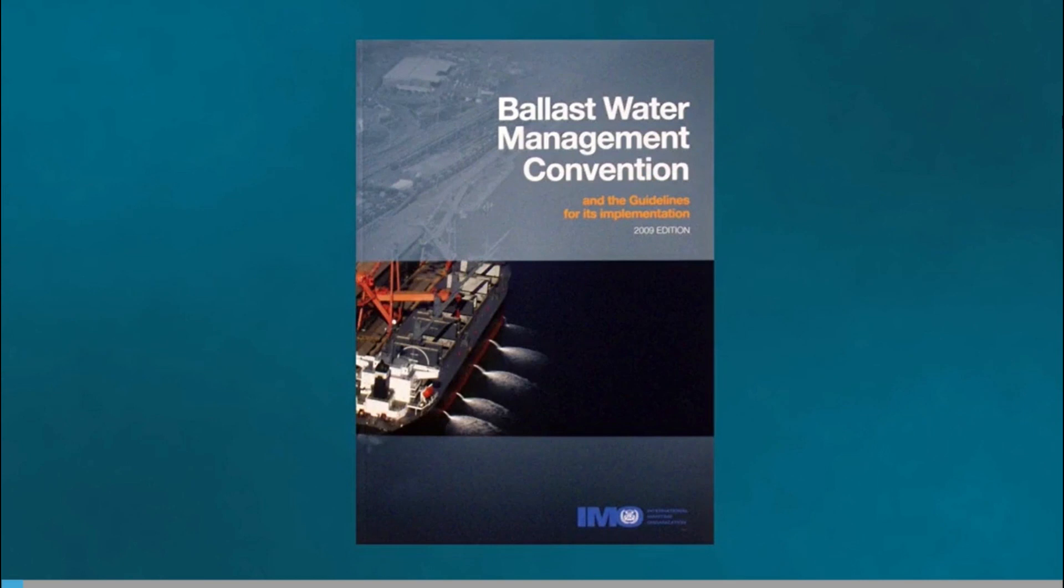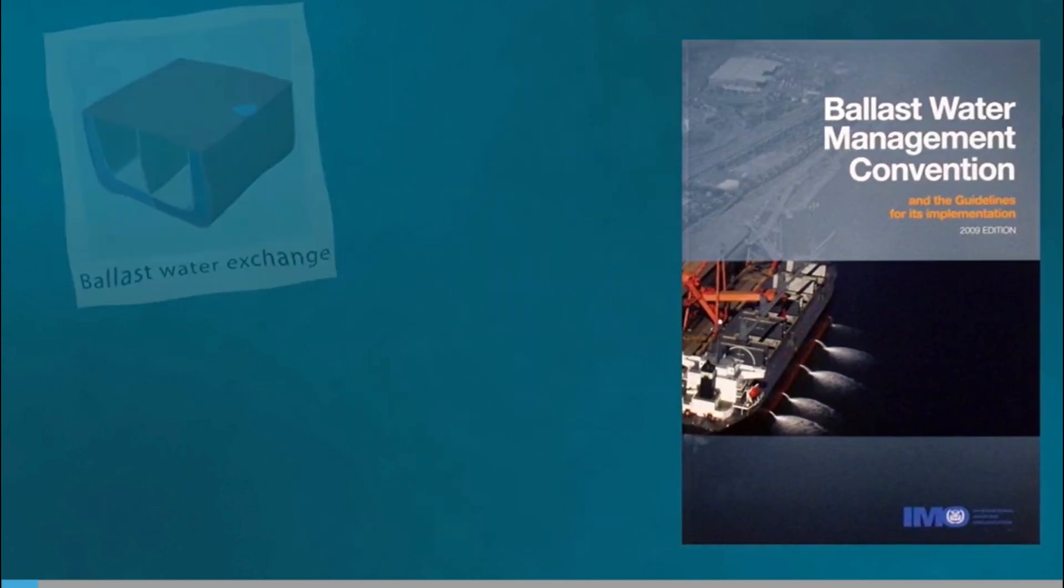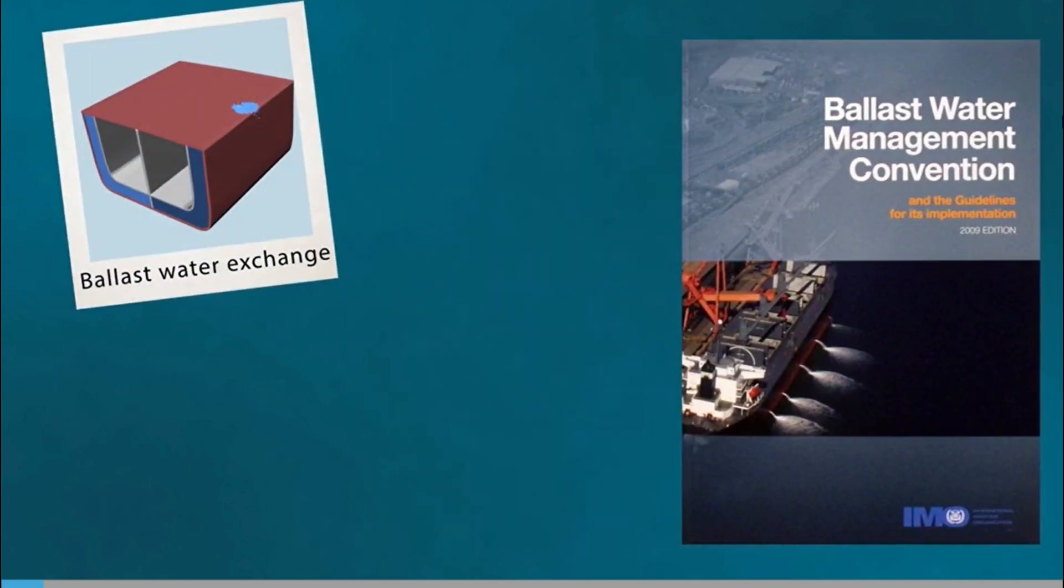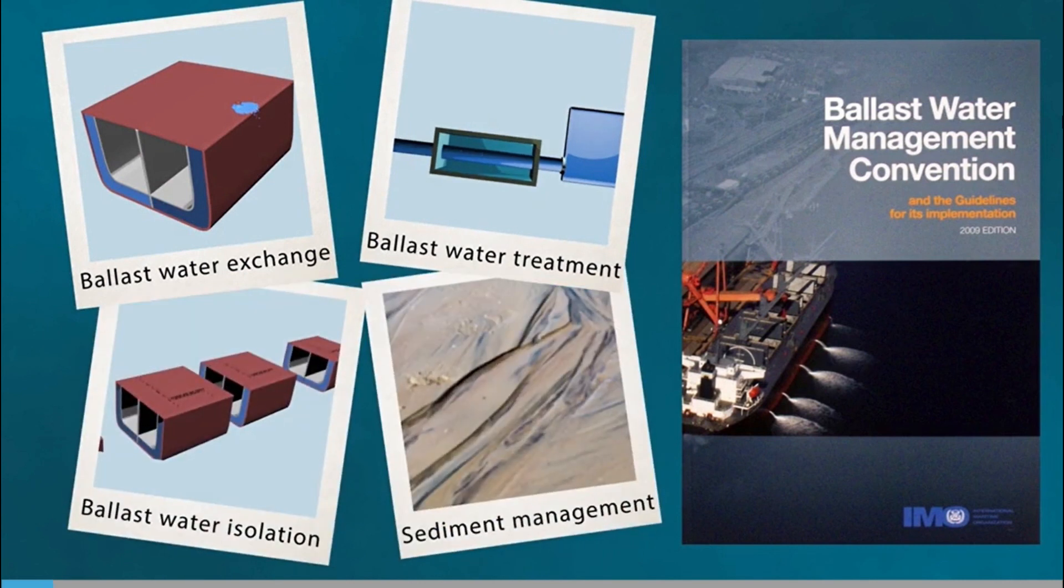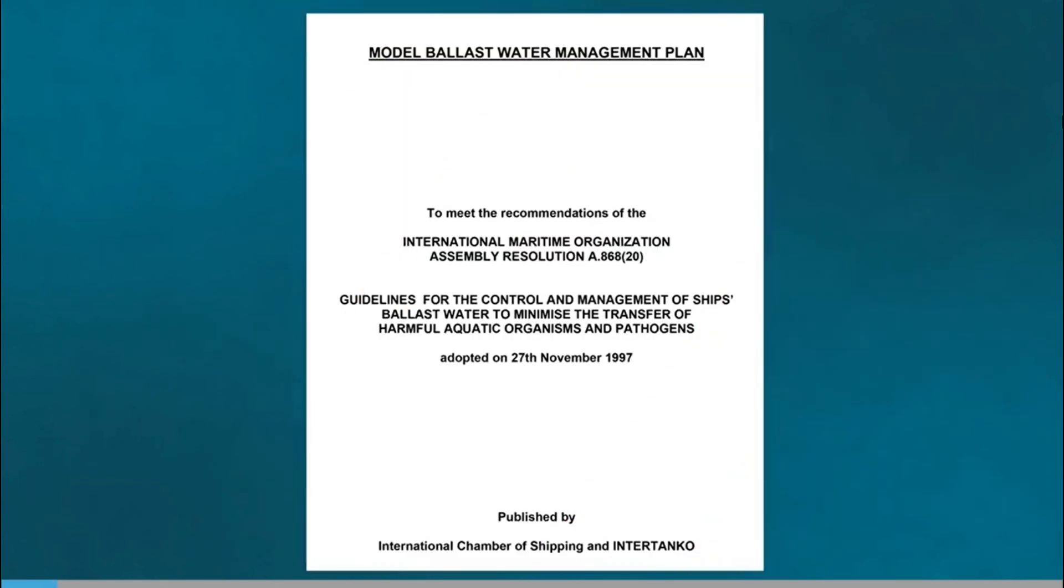The ballast water management convention identifies four different methods to achieve the aims of the convention: ballast water exchange, ballast water treatment, ballast water isolation, and sediment management. A ship-specific ballast water management plan that describes which methods are used and how compliance is achieved must be developed.